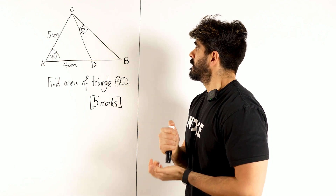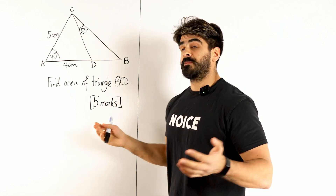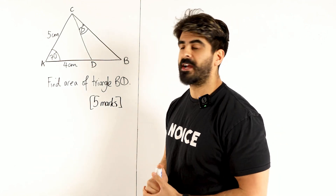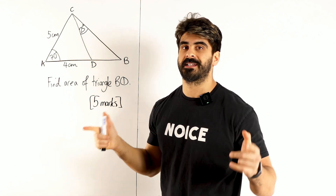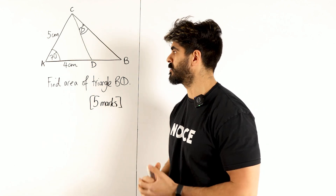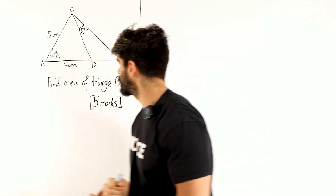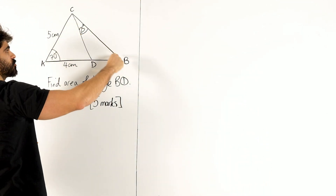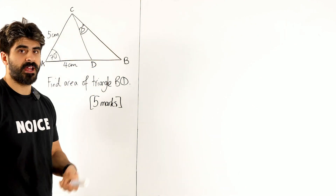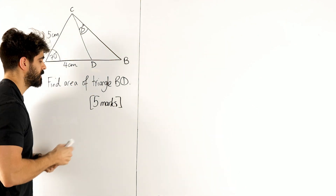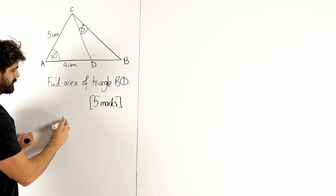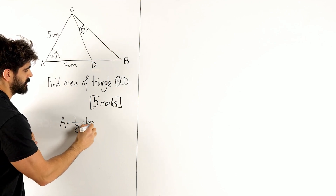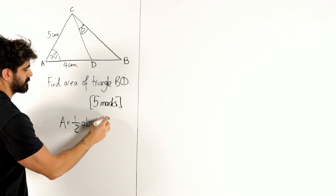If it's a non-right-angled triangle, how do you work out the area? Well, it's half AB sine C. The question is saying work out the area of this triangle — it's not a right-angled triangle, so the area is a half AB sine C.